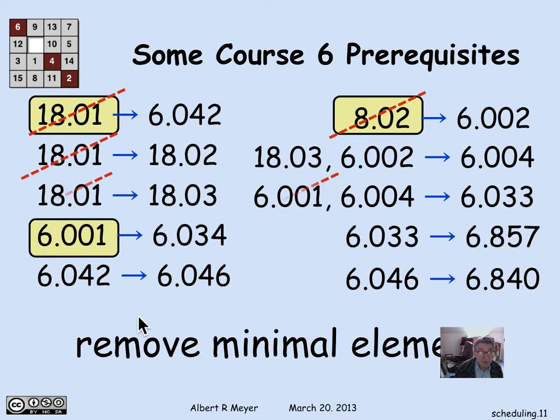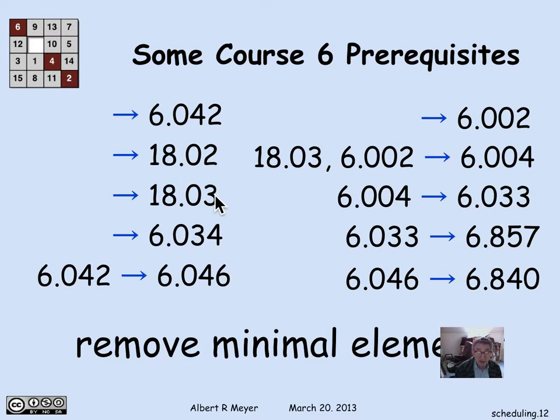Well, the next step then is just get rid of them, because they're scheduled already. So we can get rid of all those occurrences of 18.01, 8.02, and 6.001. Not only, there are other occurrences as well here, where 18.01 is a prerequisite for things. So they're all gone. And we get a simplified diagram where we've removed the minimal elements.